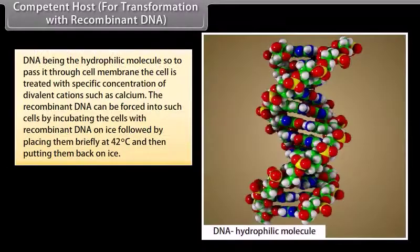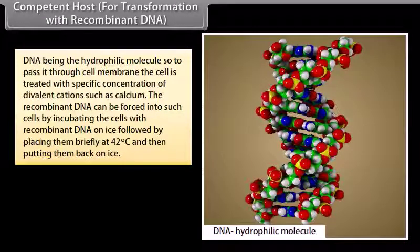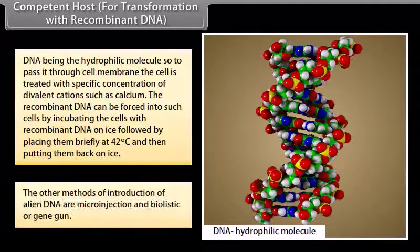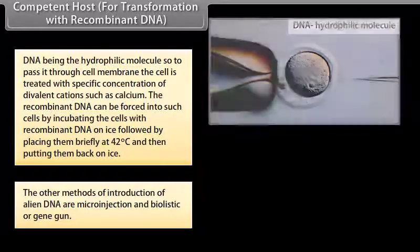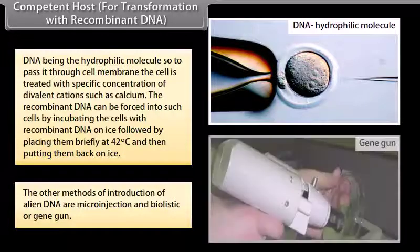Competent host for transformation with recombinant DNA. DNA being the hydrophilic molecule, so to pass it through cell membrane, the cell is treated with specific concentration of divalent cations such as calcium. The recombinant DNA can be forced into such cells by incubating the cells with recombinant DNA on ice, followed by placing them briefly at 42 degrees Celsius and then putting them back on ice. The other methods of